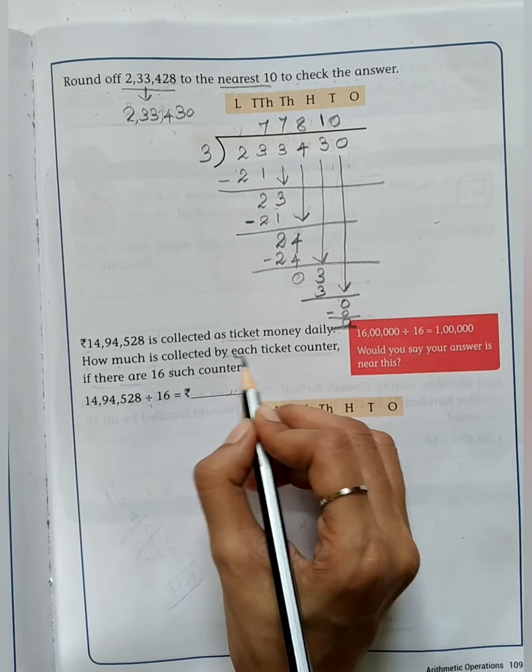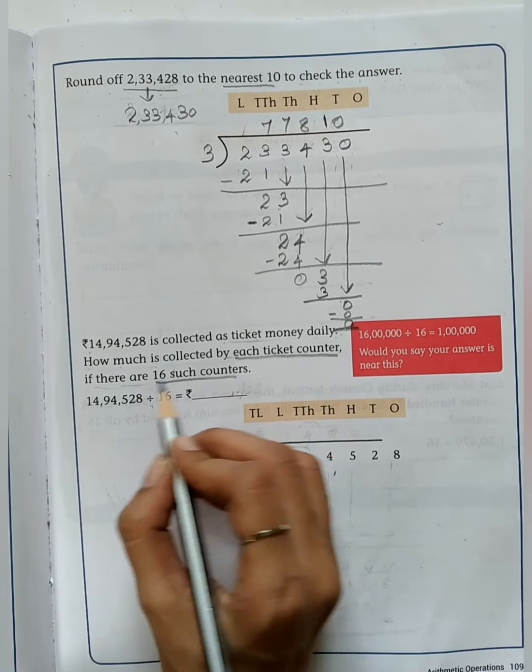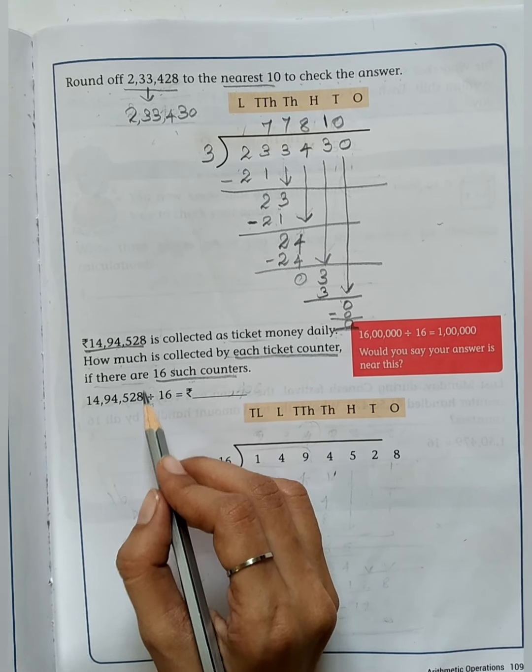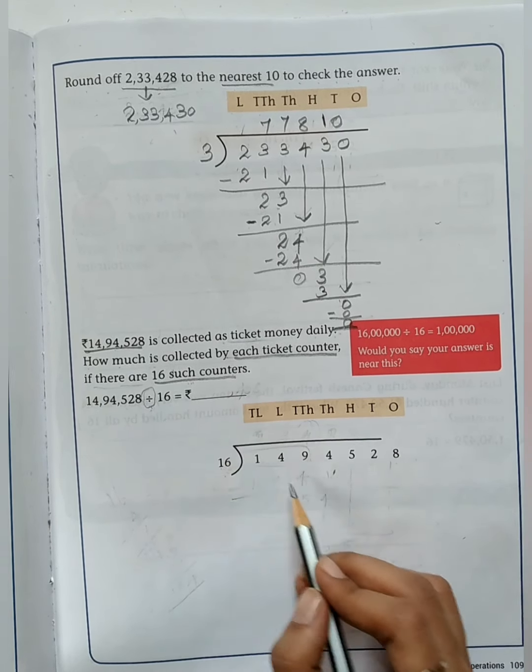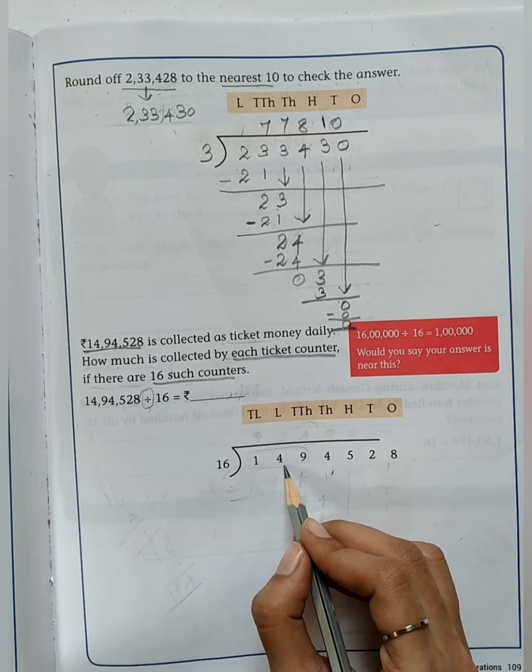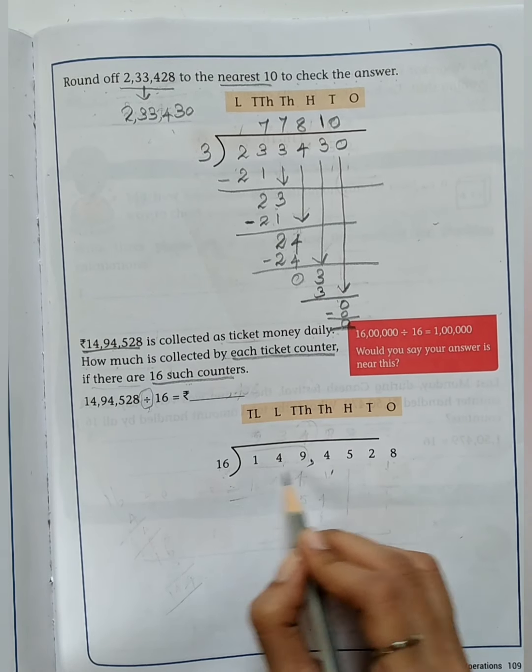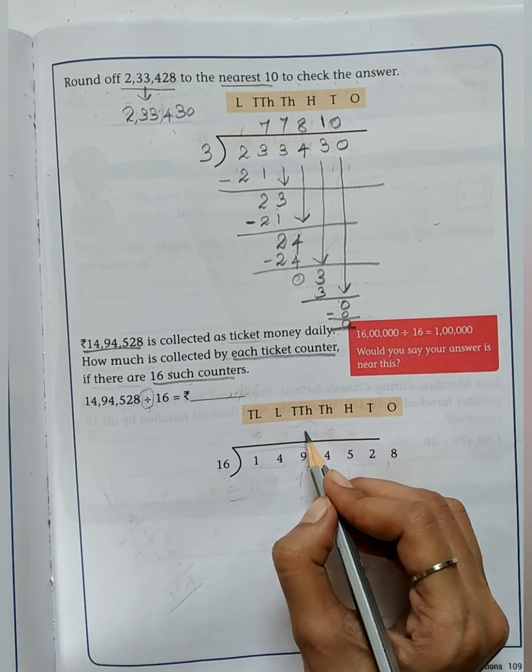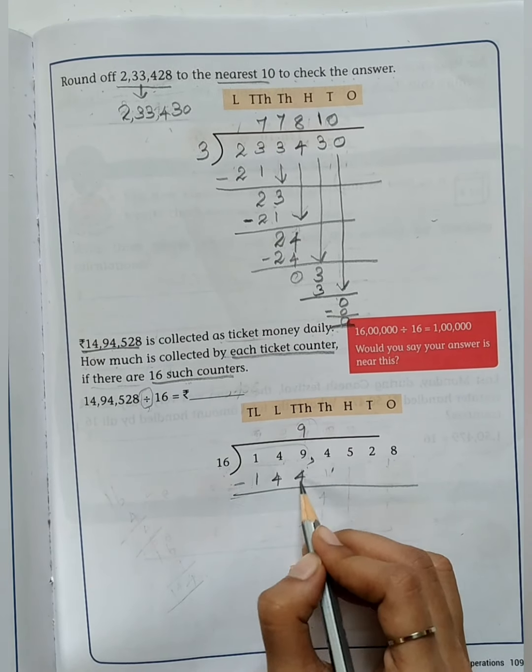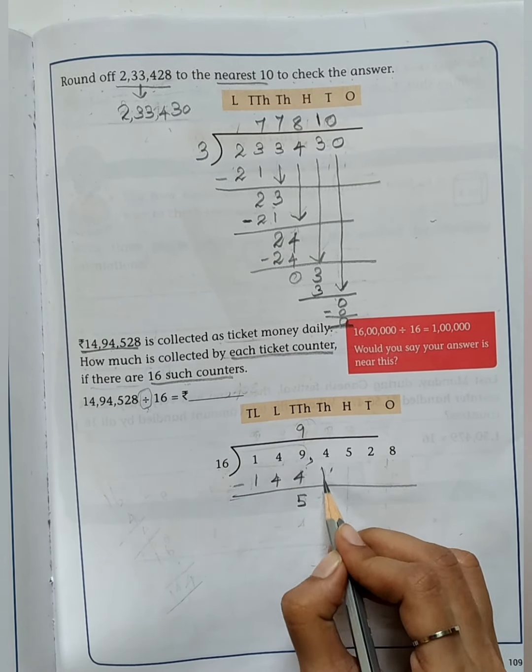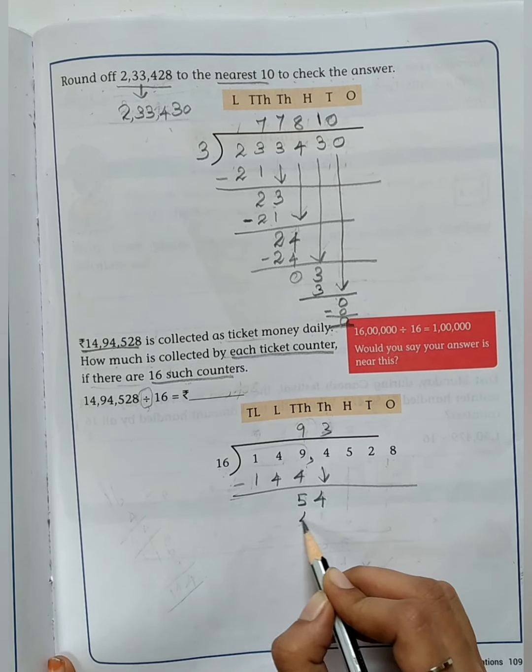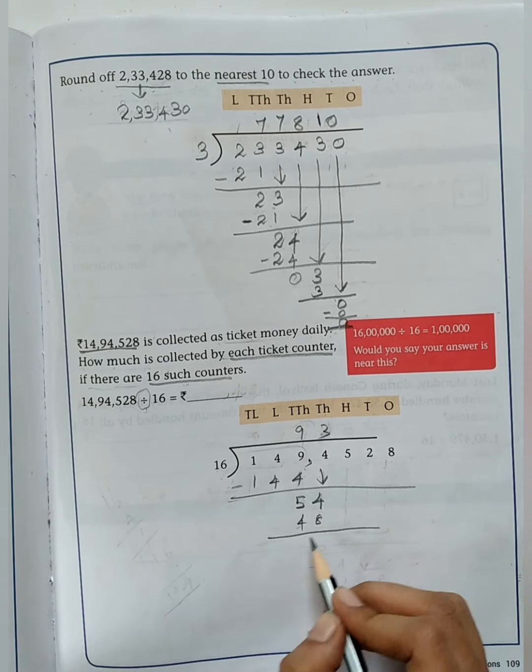See the next question. Rs. 14,94,528 is collected as ticket money daily. How much is collected by each ticket counter if there are 16 such counters? We are going to split up the money into 16 counters, so we have to do the division. I can't take 14 because 14 is less than 16, so I just taken 3 numbers here. 9 into 16 you will get the answer as 144.